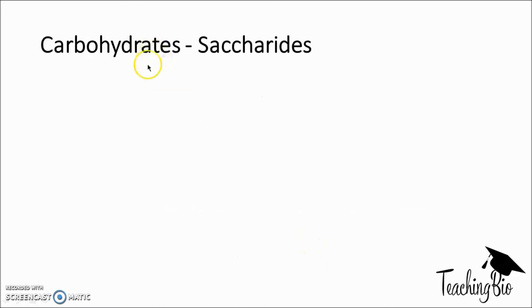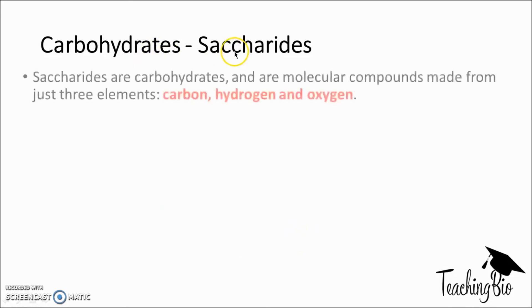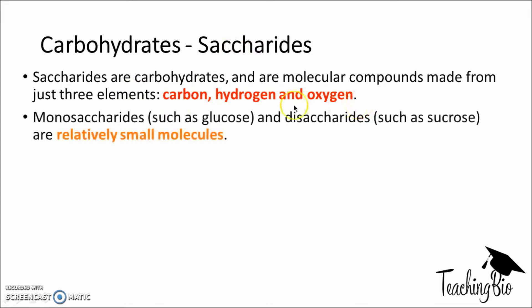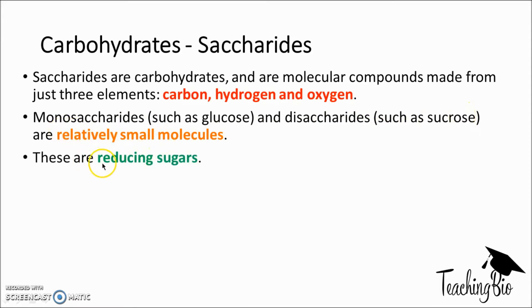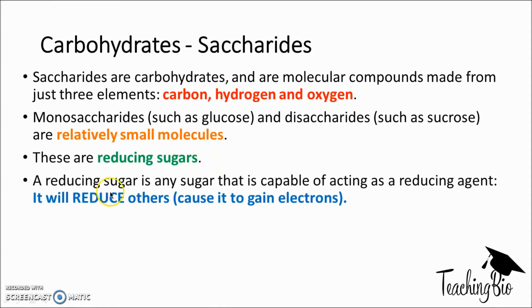Carbohydrates are known as saccharides. Saccharides are molecular compounds made up of carbon, hydrogen and oxygen. Monosaccharides, for example glucose, and disaccharides such as sucrose are quite small molecules. They are also known as reducing sugars, which means that they are able to act as a reducing agent and reduce other compounds - that is, cause them to gain electrons.